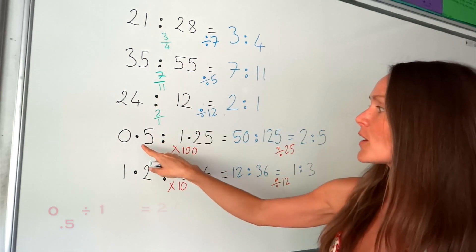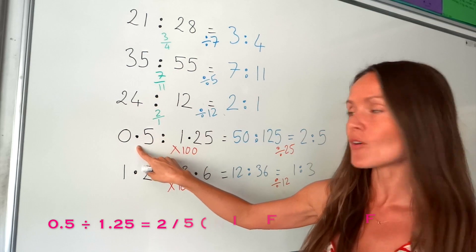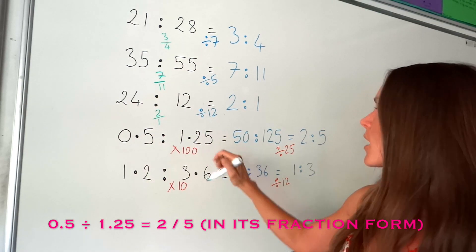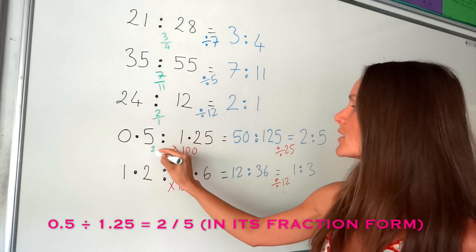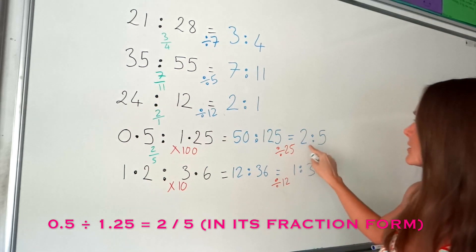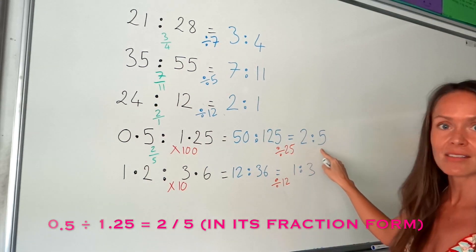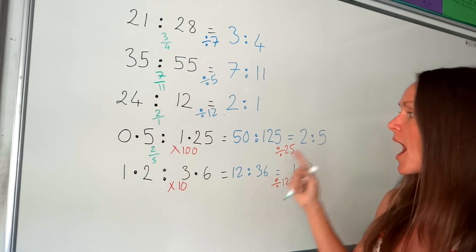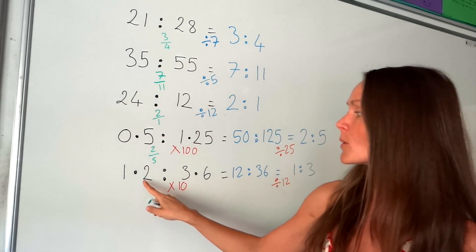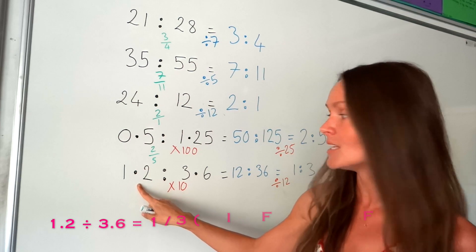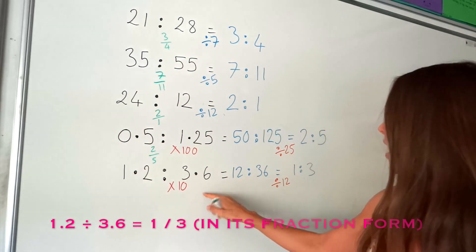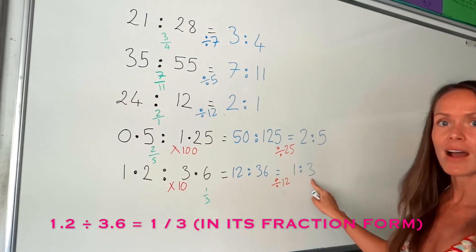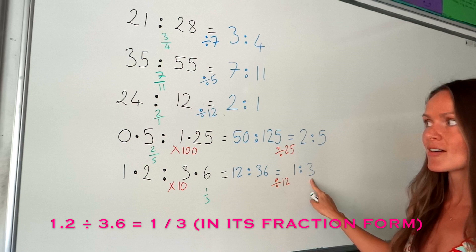On this one, if I do 0.5 divided by 1.25, I get 2 fifths, which is the correct answer in my simplified ratio. And the same on this one — if I divide the two numbers, I get 1 over 3, which matches the answer.